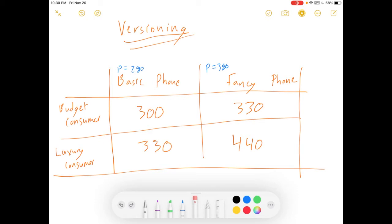Well, we need to calculate the consumer surplus for both people. And if the budget consumer wants the basic phone and the luxury consumer wants the fancy phone, then it is. So, consumer surplus for the budget consumer buying basic. They're willing to pay $300. They only pay $280. Consumer surplus is $20. For the fancy phone, they're willing to pay $330. They pay $380. Consumer surplus is negative $50. They prefer to buy the basic phone.